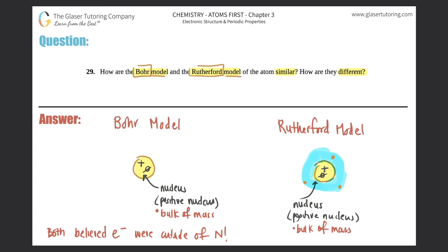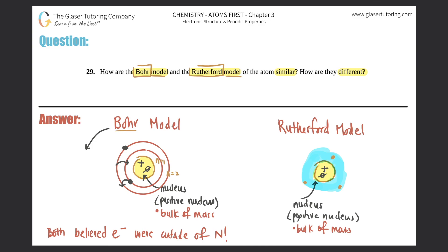Bohr, on the other hand — as we've been drawing — had specific shells. Bohr expanded on Rutherford and said that electrons are only allowed to be in the shells, whether n equals 1, n equals 2, n equals 3, 4, or 5. It was Bohr who invented the idea that electrons were specifically in their own shells. Bohr also said that electrons could jump from higher shells — like 1 to 2 — or jump back from 2 to 1.